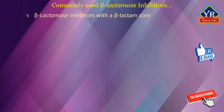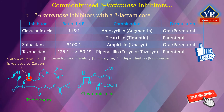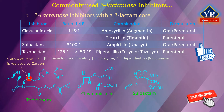Beta-lactamase inhibitors with a beta-lactam core: Tebipenem is the first carbapenem to be administered orally in the form of tebipenem pivoxil. Structural and kinetic studies of tebipenem are available with Mycobacterium tuberculosis beta-lactamase. Clavulanic acid is usually combined with amoxicillin (known as Augmentin) or ticarcillin (known as Timentin). Augmentin is given either by oral or parenteral route, and Timentin is administered parenterally. Sulbactam is usually combined with ampicillin or cefoperazone and is administered either orally or parenterally. Tazobactam is usually combined with piperacillin and is given parenterally.